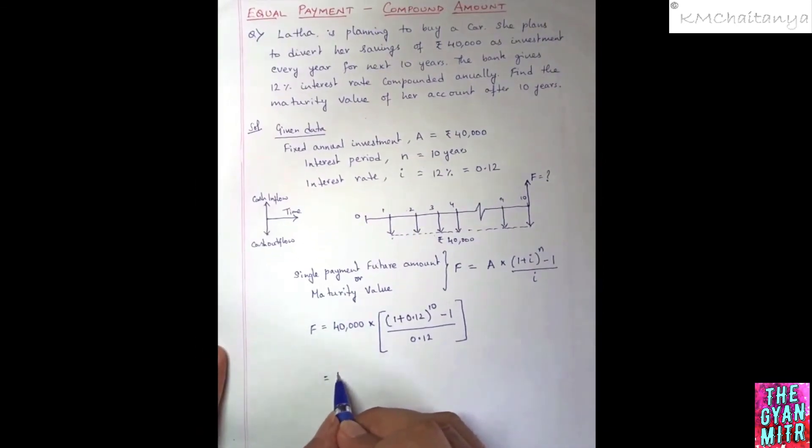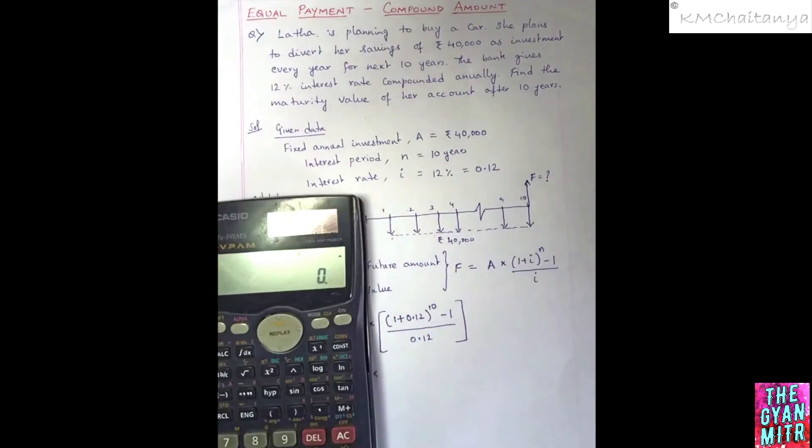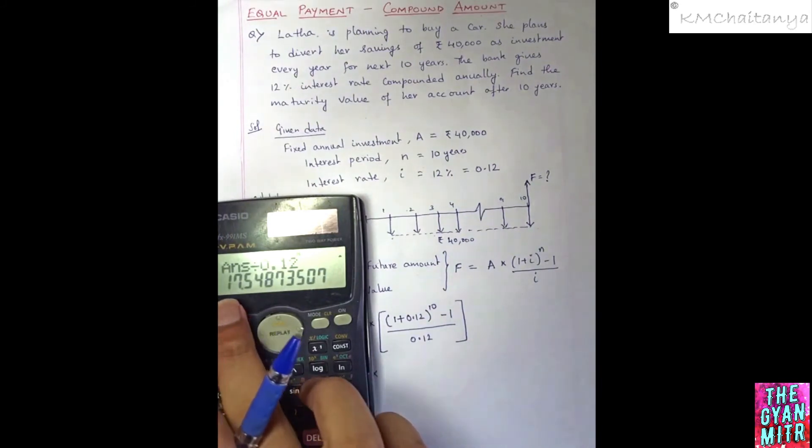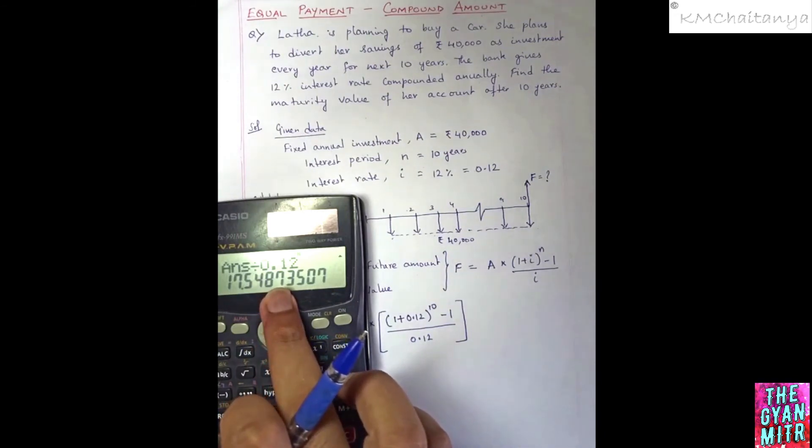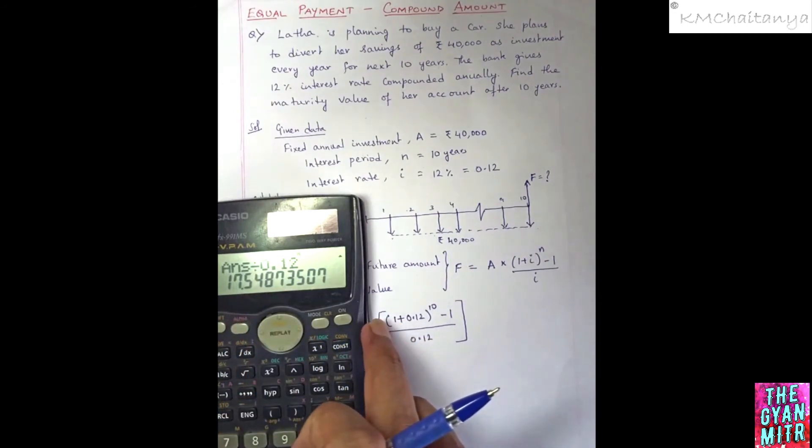Which is equal to 40,000 multiplied by the value of this particular term. Now we'll calculate what is the value of this term. The value of in brackets, 1 plus 0.12 to the power of 10 minus 1 divided by 0.12, which I am getting as 17.548 or 17.549, I am rounding it. So the value is 17.548.